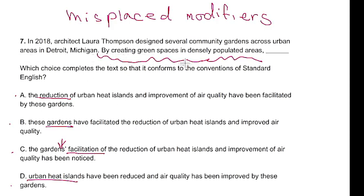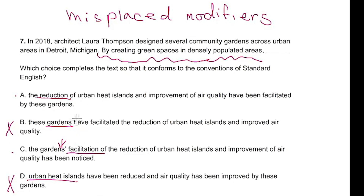Now let's read the introductory phrase: By creating green spaces in densely populated areas. We know it's definitely not gardens or urban heat islands because neither of those things can create green spaces. So it's between reduction or facilitation. Since it's about creating — it's probably facilitation. Reading it all the way through: By creating green spaces in densely populated areas, the garden's facilitation of the reduction of heat islands and improvement of air quality has been noticed. That makes sense. So the steps are: find your subjects, read your introductory phrase, eliminate, and find the best match.